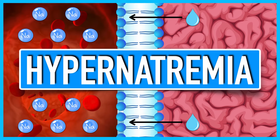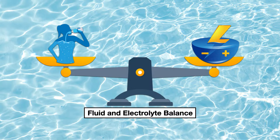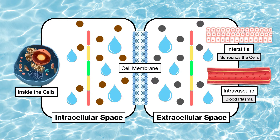If you haven't already, it may be worth watching my lecture on hypernatremia. In that video, I discussed the basic principles underlying fluid and electrolyte balance in the body. I explained how water exists inside the cells — also known as the intracellular space — as well as outside the cells in the extracellular space, which includes the blood plasma and the interstitial fluid that surrounds and bathes the cells and tissues.